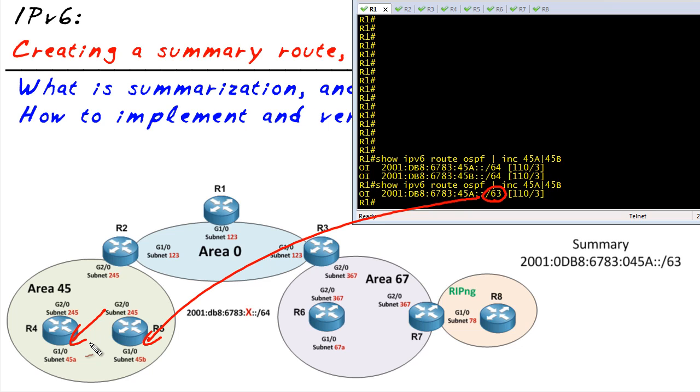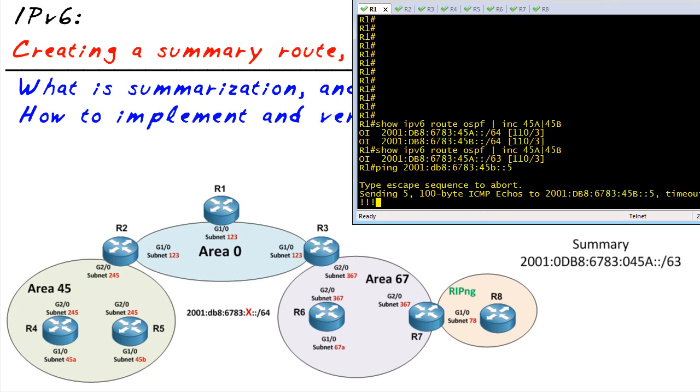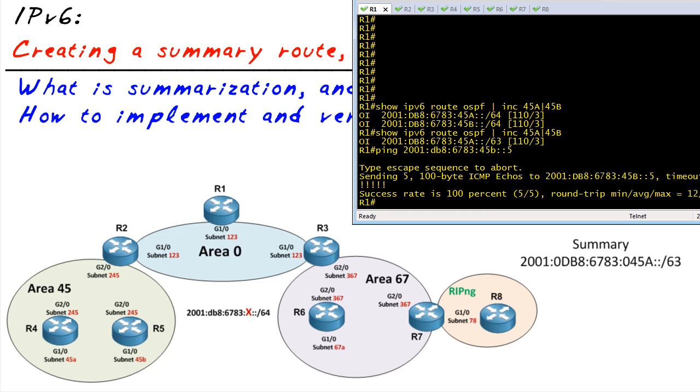And we should still have connectivity to devices down in that network. We can verify that with a quick ping. So on R1, I happen to have - R5 has an IP address on that subnet, it's colon five. So let's go ahead and ping that. So ping out to 2001:db8:6783:45b colon colon five, and that works.